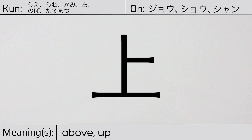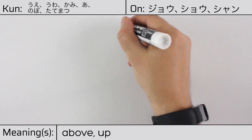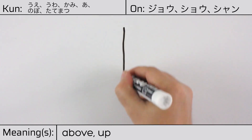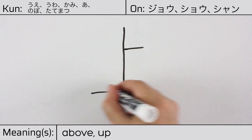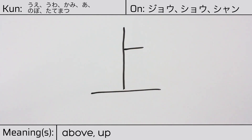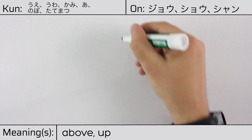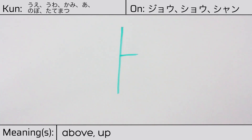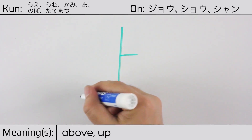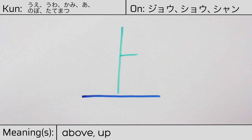Here is the stroke order. This character is made up of the following radicals or parts: Katakana to, or the oracle radical, boku, followed by wan, or ichi.